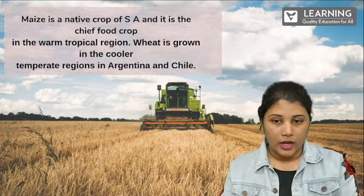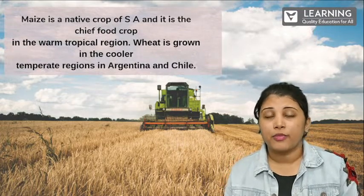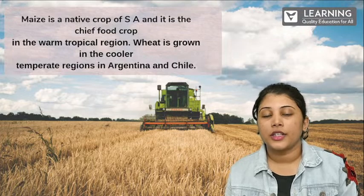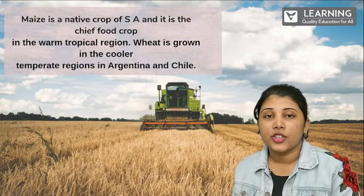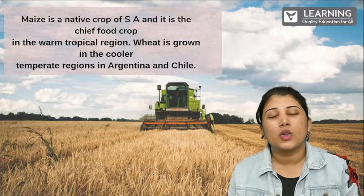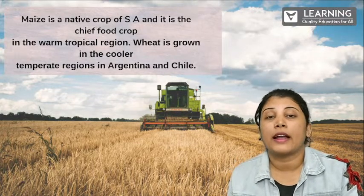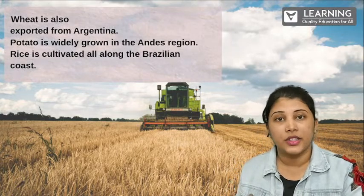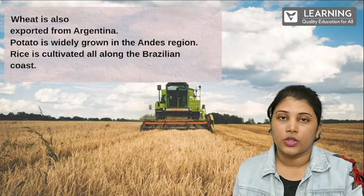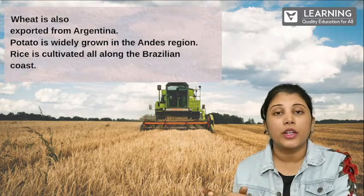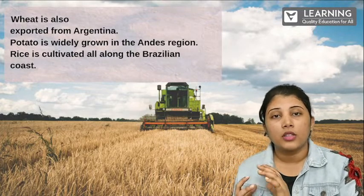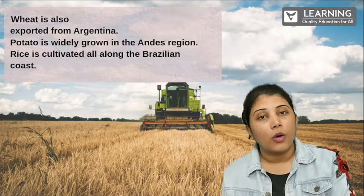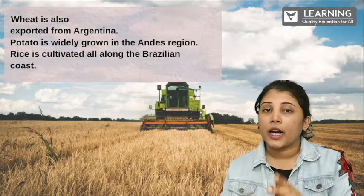Maize is a native crop of South America and it is the chief food crop. Wheat is grown in the cooler temperate region in Argentina and Chile because it needs a cooler climate to grow. Wheat is also exported from Argentina. Potato is widely grown in the Andes region because of lots of rain, good soil, climatic conditions, and water availability. Rice is cultivated all along the Brazilian coast.